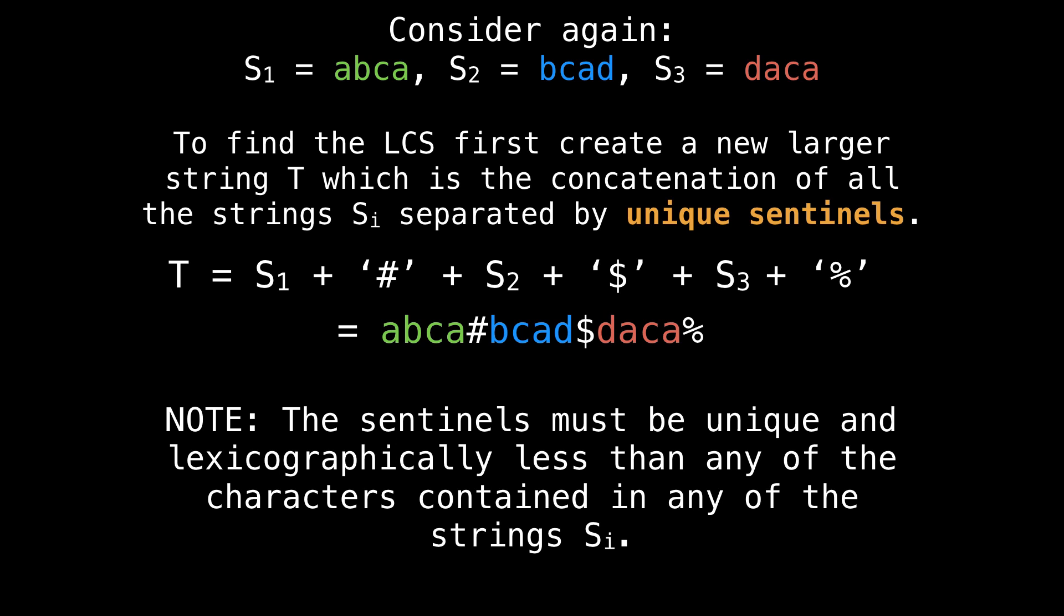Additionally, I would like to note that these sentinel values need to be lexicographically less than any of the characters contained in any of our strings. So in the ASCII table, the pound sign, the dollar sign, and the percent sign are all less than any alphabetic character contained within s1, s2, and s3.